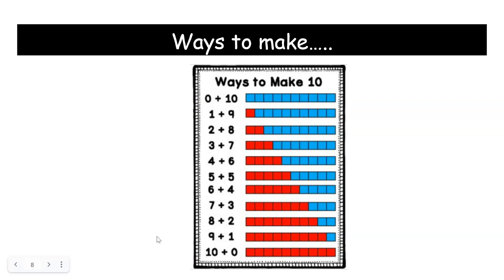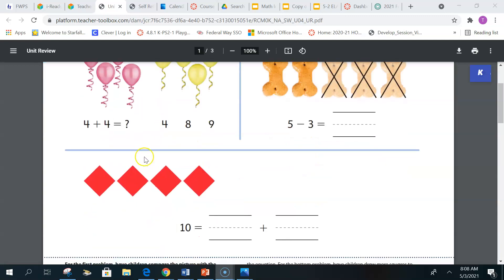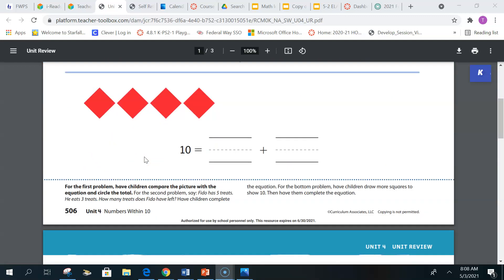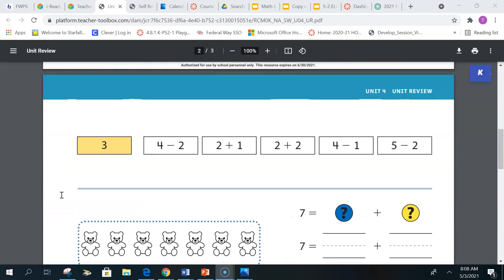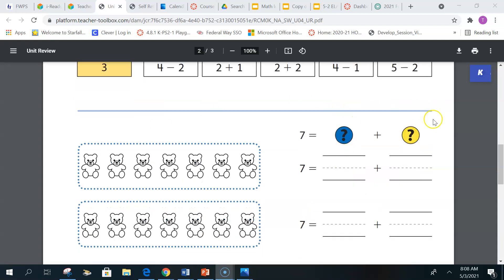So these were all the different things that we have learned in unit 4, adding and subtracting. So you're going to go ahead and do the unit review, answering the questions or writing in that number sentence. Right here are the directions for your adult to read. These are all things that we have done before. Remember when the addend is unknown, you're going to color some bears.